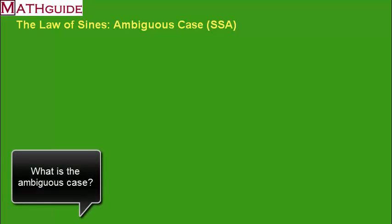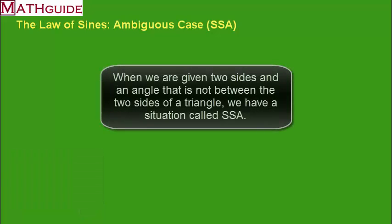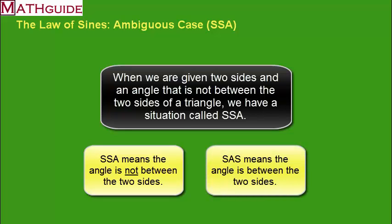Let's start by talking about what the ambiguous case is. The ambiguous case exists when we're given a triangle, and we're given an angle of a triangle, and then the lengths of two sides of a triangle. And the angle cannot be the angle that's between the two sides. That's why we write it as side-side-angle. The angle's written last. It's not written in between the two sides, which would be side-angle-side.